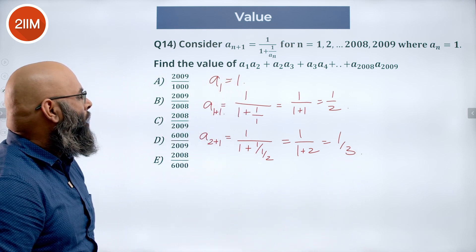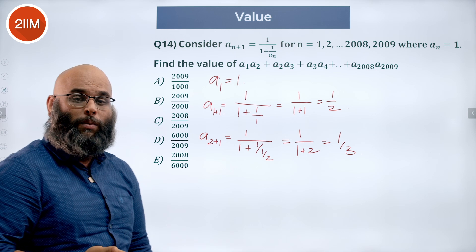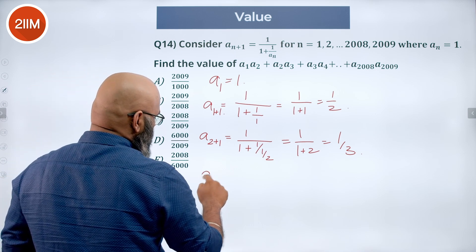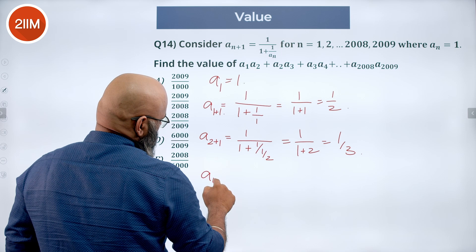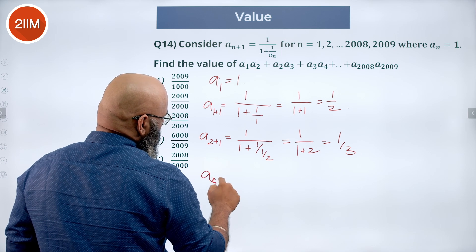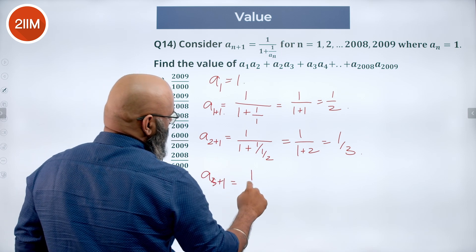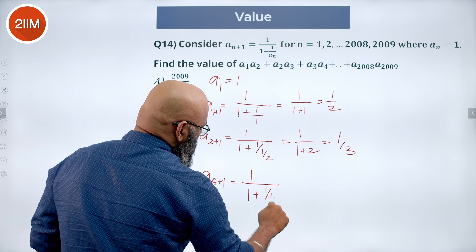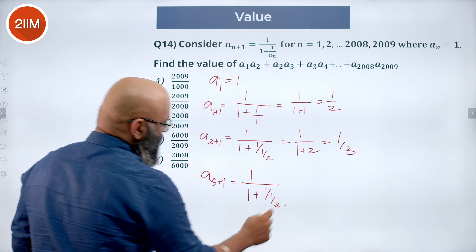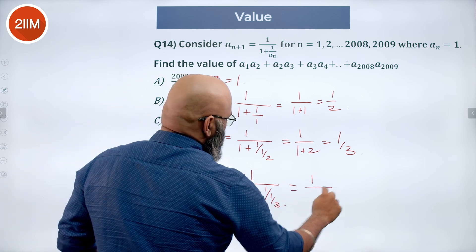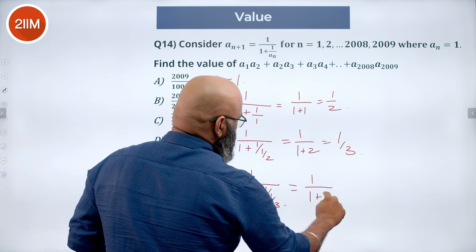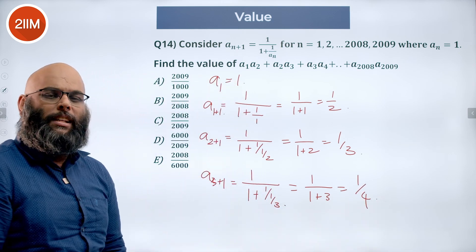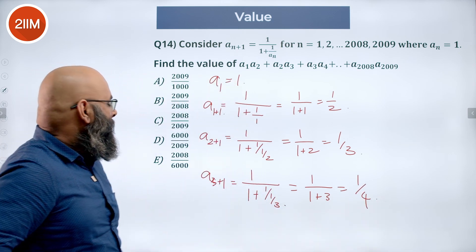We have a(1) = 1, a(2) = 1/2, a(3) = 1/3. Let's verify with a(4): a(4) = 1 / (1 + 1/a(3)) = 1 / (1 + 1/(1/3)) = 1 / (1 + 3) = 1/4. We clearly see the pattern confirmed.